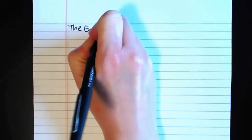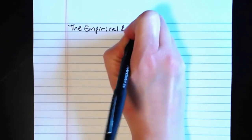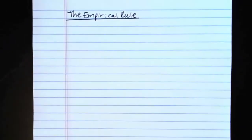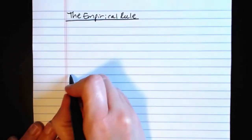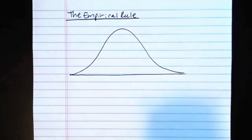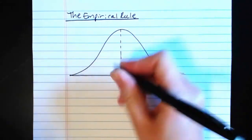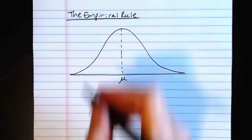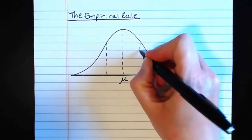This video is a continuation of talking about graphs of normal probability distributions, but specifically we're going to be taking a look at something called the empirical rule. I'm going to make you a drawing of this, but if you want a more precise and nicely labeled drawing you can look in your book. Here is our normal bell curve shape, and we know the graph will be centered at the mean mu, and then we measure the graph going out in tick marks of standard deviation.